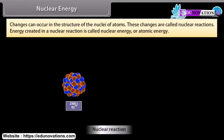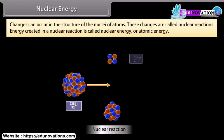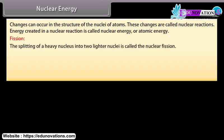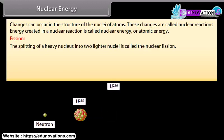Nuclear energy: Changes can occur in the structure of the nuclei of atoms; these changes are called nuclear reactions. Energy created in a nuclear reaction is called nuclear energy or atomic energy. Fission: The splitting of a heavy nucleus into two lighter nuclei is called nuclear fission. When a slow neutron strikes a Uranium-235 nucleus, it is absorbed by the nucleus and an unstable isotope Uranium-236 is formed, which immediately breaks into two fragments, emitting two or three neutrons with release of an enormous amount of energy.